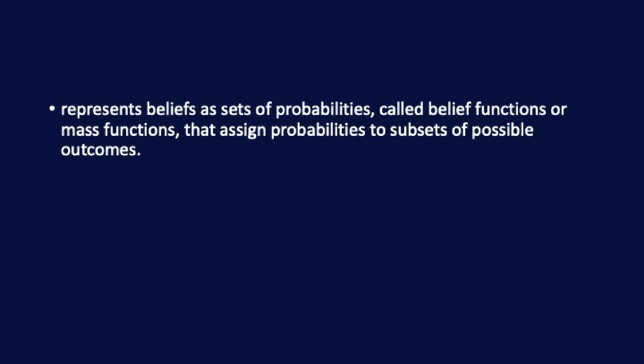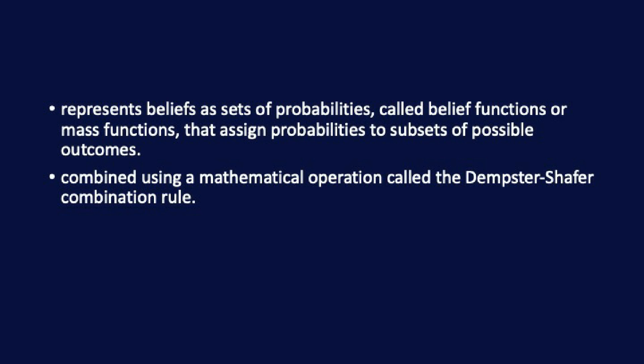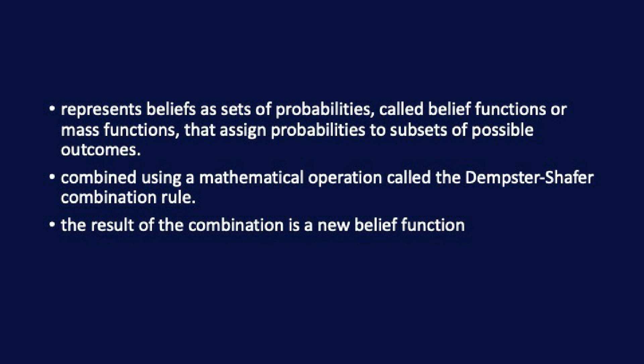The theory represents beliefs as sets of probabilities, called belief functions or mass functions, that assign probabilities to subsets of possible outcomes. These belief functions are combined using a mathematical operation called the Dempster-Shafer combination rule, which takes into account the degree of overlap between different sets of evidence. The result of the combination is a new belief function that represents our updated degree of belief in the different hypotheses or events.